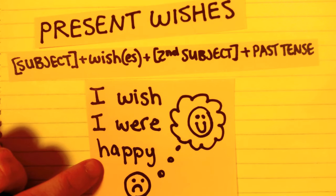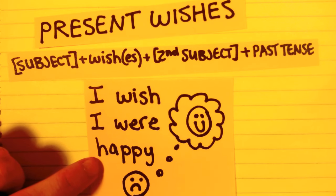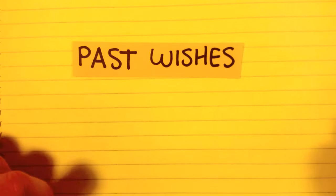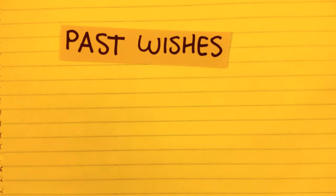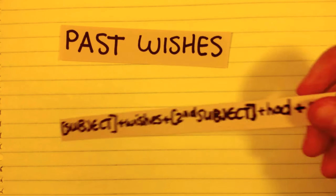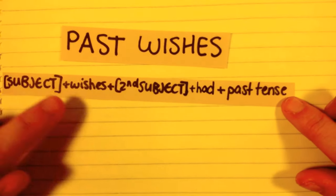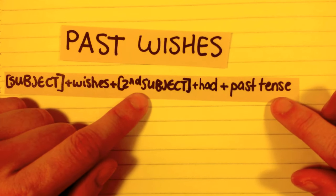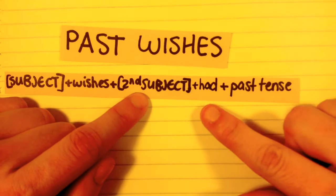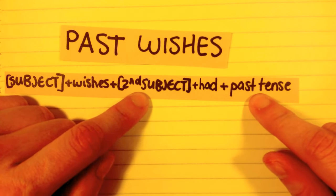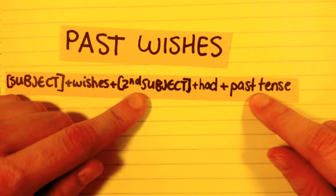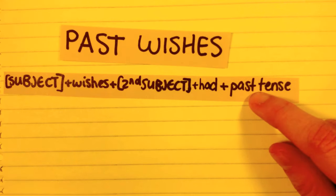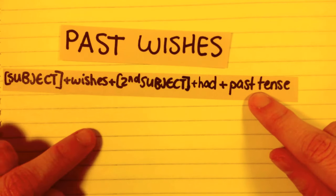What about wishes about things that have already happened? Those are past wishes. The way we talk about past wishes is to use: subject plus the correct form of 'to wish,' plus the second subject, plus 'had,' plus the past participle. This is actually the past perfect tense.